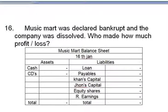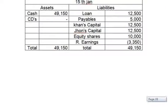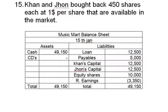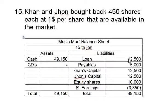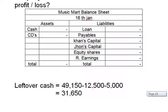We need to calculate the leftover cash. The cash account showed $49,150. When we dissolved the company, the bank loan of $12,500 is repaid first, then payables of $5,000 are repaid. The calculation is: $49,150 minus $12,500 minus $5,000, giving us a leftover cash of $31,650, which is then available for sharing between the equity shareholders and capital owners.